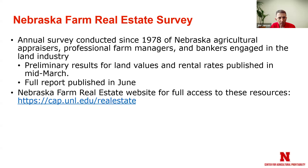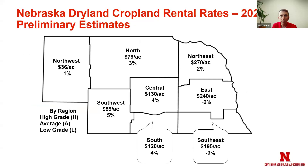The best place to find this information is the real estate website we have listed here, or you can take a look at your local extension office — many of them can run off a copy or have additional information. Ryan Evans also slipped in the hyperlink to the website in the chat. For dry land cropland in 2024, the rates are somewhat mixed across Nebraska. About half the state reported slight decreases, half reported slightly up — these numbers would indicate that overall cash rents are maybe steady to slightly mixed, depending on where you're at.